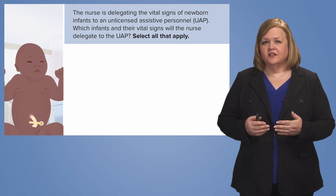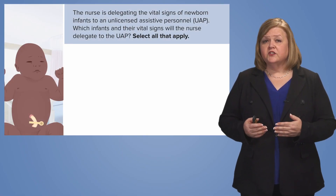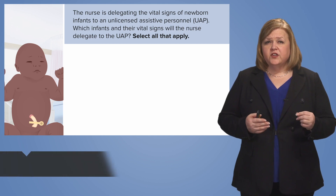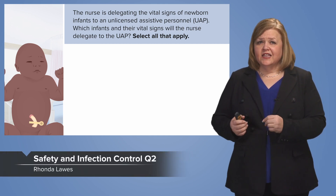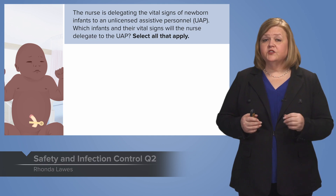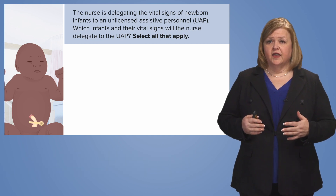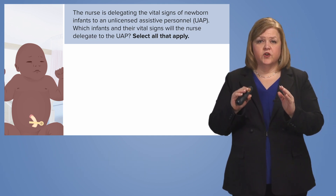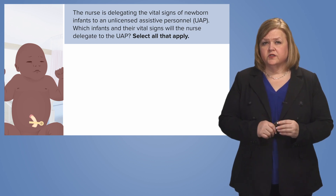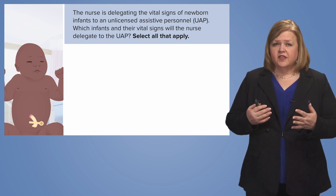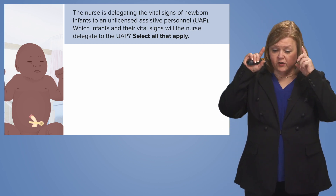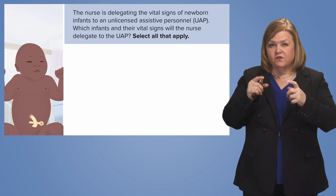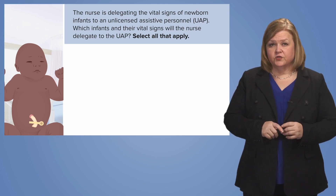The nurse is delegating vital signs of newborn infants to an unlicensed assistive personnel. Which infant's vital signs will the nurse delegate to the UAP? Select all that apply. We're going to stop right there with the stem of the question — the words before the answer choices. We always break that down to make sure we are laser focused on what we're looking for before we look at the answer choices.